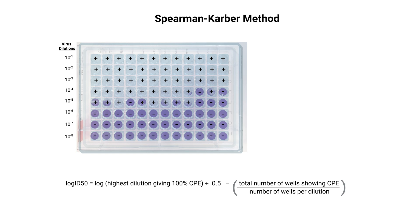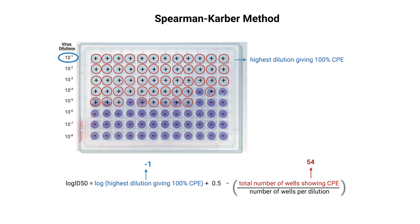So, let's return to our 96-well plate and use the Spearman-Kärber method to calculate the TCID-50. First, we need to identify the highest dilution at which all the wells are infected. In our example, this dilution is 10 to the minus 1. Next, we count the total number of wells in the plate that show infection. For our case, we have 54 wells showing infection. Now, let's consider how many wells we have per dilution. In this setup, we have 12 wells for each dilution.